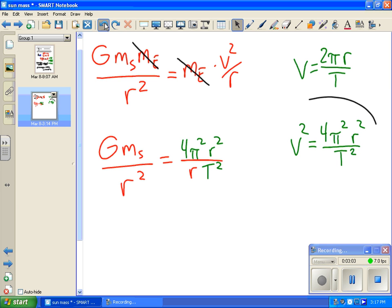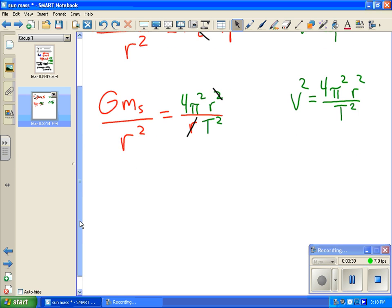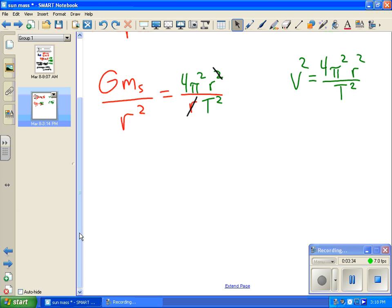I can clean this up a little bit. On the right side, I've got r squared here and r here, so I can divide those out. Also, I can multiply this r squared over to the other side, so when I multiply that r squared over, it's going to be in the numerator. So I end up with big G times the mass of the Sun equals 4 times pi squared times r cubed all divided by t squared. If I want to solve for the mass of the Sun, I just divide both sides by that big G number.